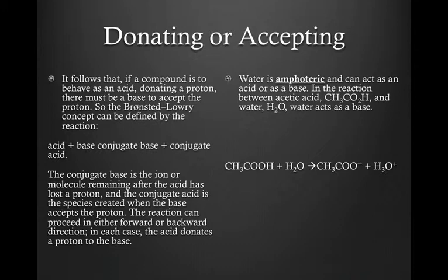The conjugate base is the ion or molecule remaining after the acid has lost a proton. And the conjugate acid is the species created when the base accepts the proton. So, the reaction can proceed in either a forward or backward direction. In each case, the acid donates a proton to the base.